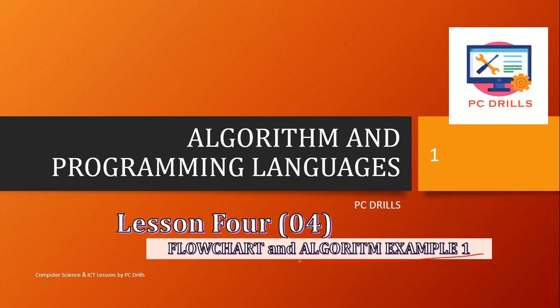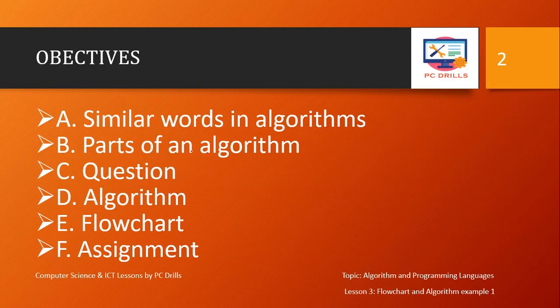We do our first example. Our objectives for today are: A - to see similar words in algorithm, B - parts of an algorithm, C - the question, D - the algorithm for the question, E - the flowchart for the question, and F - an assignment that will be something easy for you who are following up to be able to do.